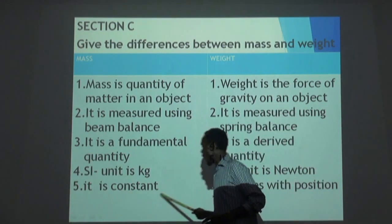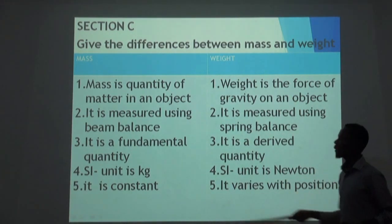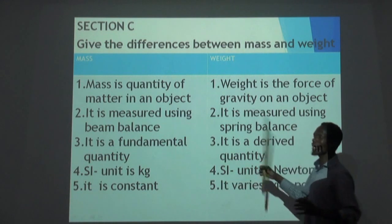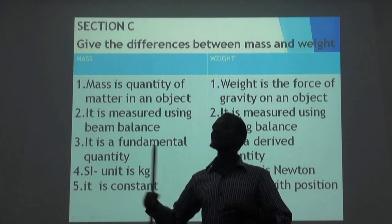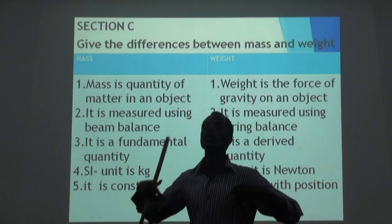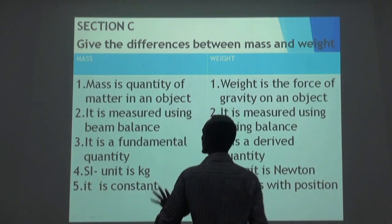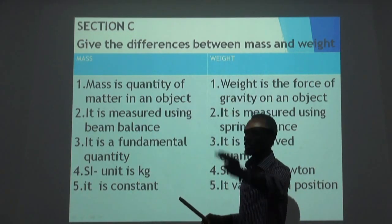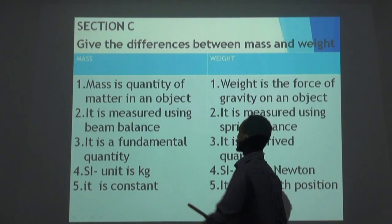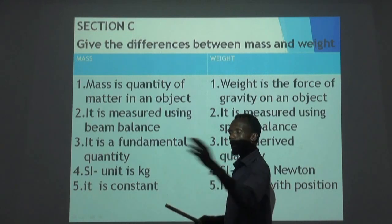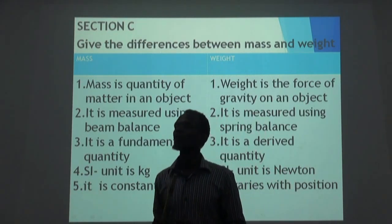Mass is constant and weight varies with position. That is how you give the difference between mass and weight. If somebody asks you to give five differences between mass and weight: first, give the definition; second, the instrument used to measure them; third, the type of quantity; fourth, the unit; and lastly, the difference in terms of variation — weight varies with position but mass is always constant.